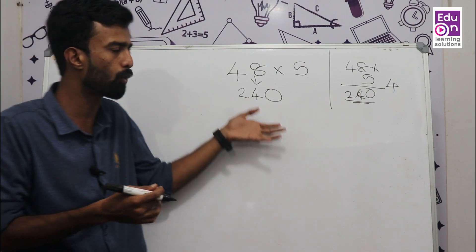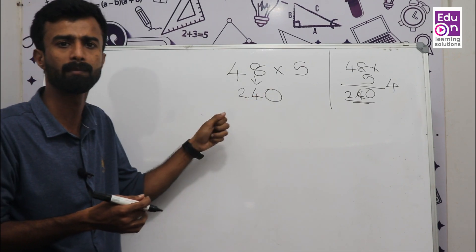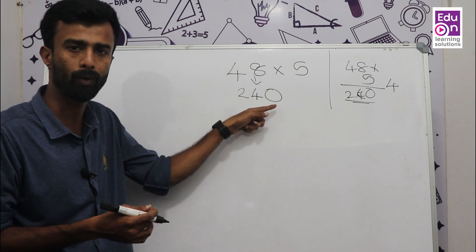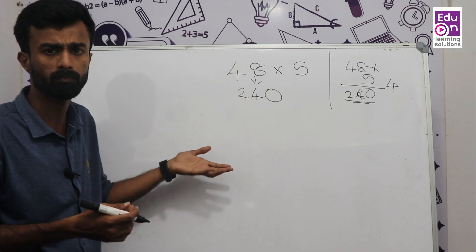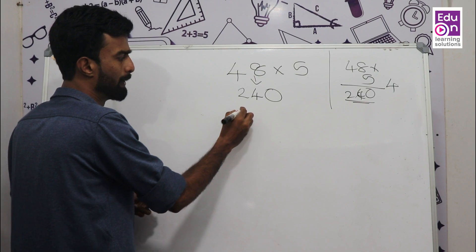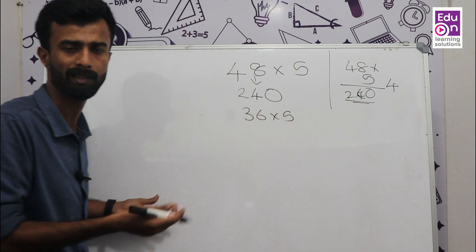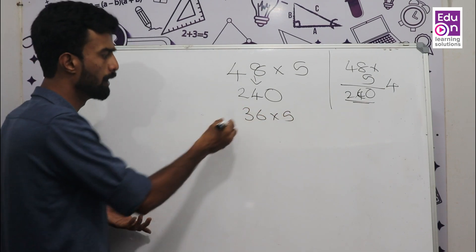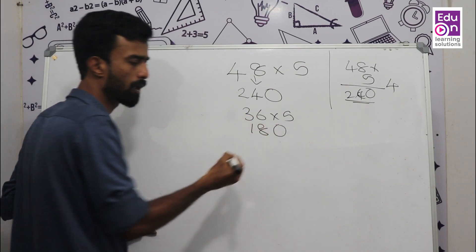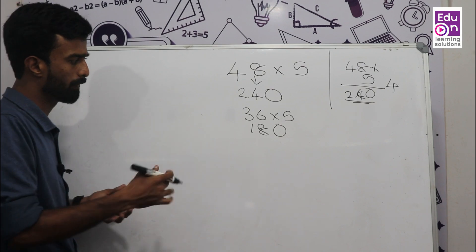So the shortcut is: multiply by 10, but first take half. Example: 36 × 5 — half of 36 is 18, then multiply by 10 to get 180.